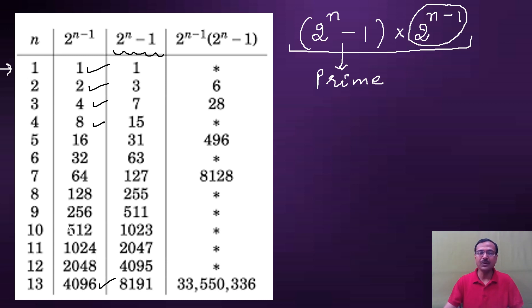If you take n equal to 1, 2 raised to power 1 is 2, 2 minus 1 is 1. If n equals 2, 2 raised to power 2 is 4, 4 minus 1 is 3. 2 raised to power 3 is 8, 8 minus 1 is 7. 2 raised to power 4 is 16, 16 minus 1 is 15. 2 raised to power 5 is 32, 32 minus 1 is 31, and so on. You obtain this list of numbers.